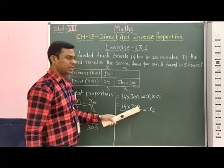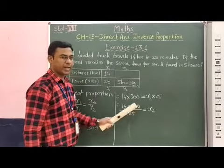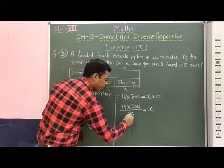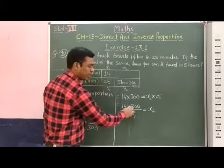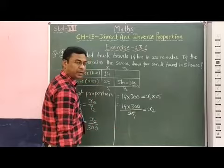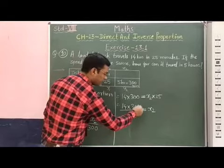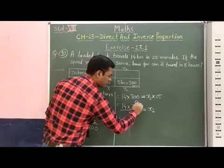Now, this 25 and 300, both are divisible by 25. Therefore, 25 goes into 25 one time. And if we divide this 300 by 25, then here 12.